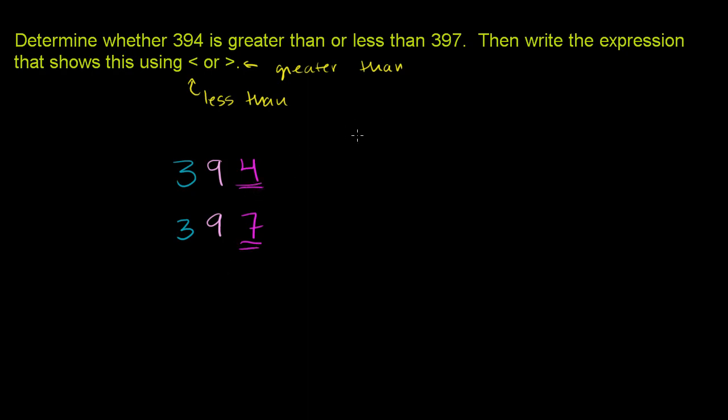If you look on a number line, 4 comes before 7. If you're counting to 7, you're going to pass up 4. So 394 is less than 397. And the way that we write that, we would write 394 is less than 397.